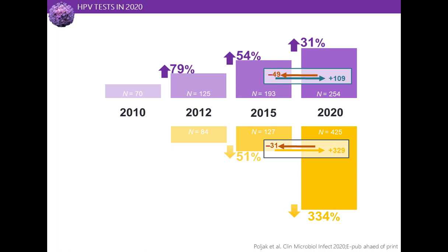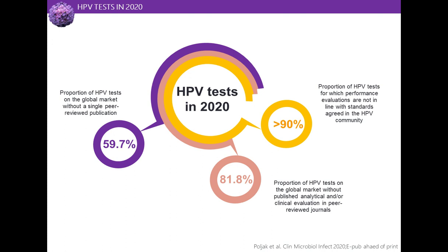Our research group has been performing the inventory of HPV assays since 2010. In the last decade, the number of HPV assays available on the global market has been increasing dramatically. In our first inventory in 2010, we identified 70 HPV assays, and this year we have identified almost more than 250 HPV tests. The problem is that almost 60% of HPV tests currently present are without any single peer-reviewed publication. Even higher — more than 80% of HPV tests are without published analytical and/or clinical evaluation in the peer-reviewed literature.